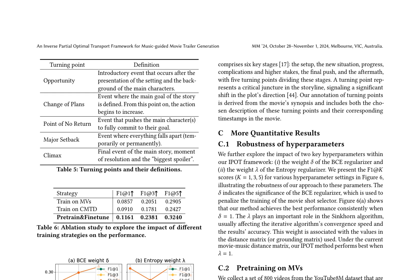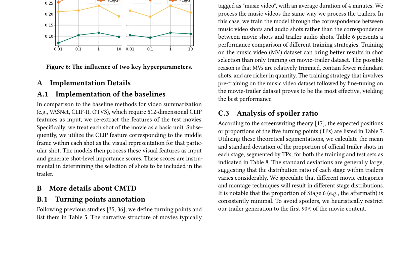An inverse partial optimal transport framework for music-guided movie trailer generation leverages the correspondence between movie shots and trailer audio to generate trailers that are more engaging and less spoilery. The proposed method, iPod, uses an inverse partial optimal transport algorithm to align the movie shots with the trailer audio, resulting in trailers that better capture the essence of the movie without revealing too much of the plot. The authors conducted an ablation study and found that pre-training on a music video dataset followed by fine-tuning on the movie trailer dataset yielded the best performance in terms of shot selection, as music videos contain fewer redundant shots.